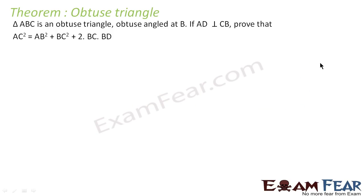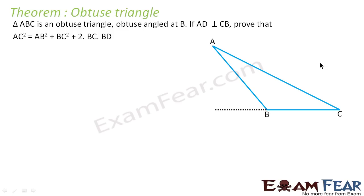The triangles obtuse triangle theorem. The theorem says that ABC is an obtuse triangle, obtuse at B. If AD is perpendicular to BC, then AC² = AB² + BC² + 2·BC·BD. That is the obtuse angle theorem. Please make note, this is a very crucial theorem.